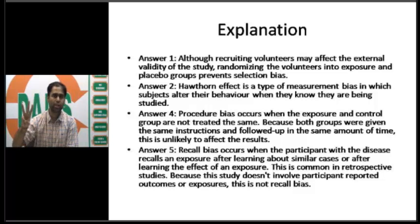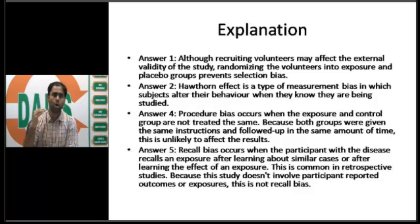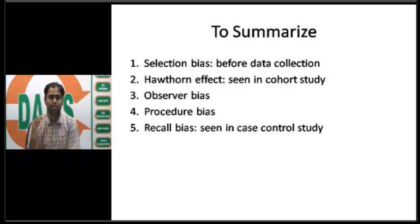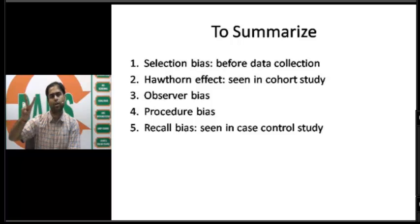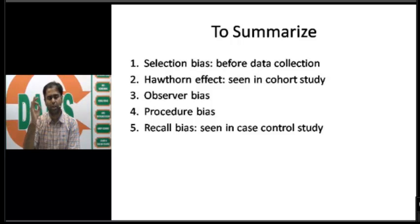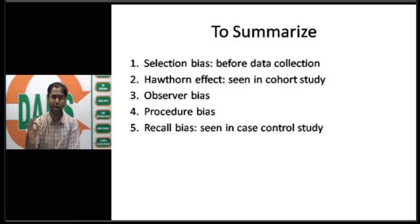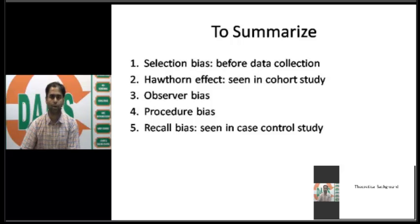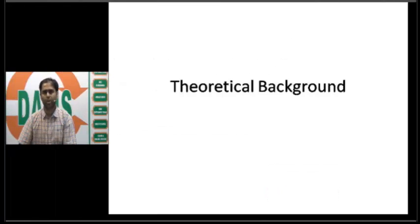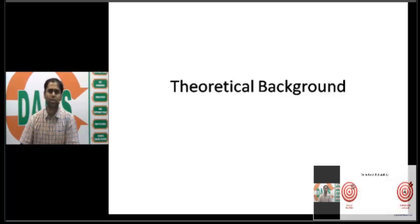With an equal degree of participation — 98% and 97% — procedure bias is relatively unlikely. The answer is option three: observer bias. This is a very important way to approach a question where you should know why you are ruling out the other options. To summarize: selection bias occurs before data collection; Hawthorne effect is seen in cohort studies; recall bias is seen in case-control studies; and procedure bias is ruled out because it implies differential treatment between groups, which did not happen here.